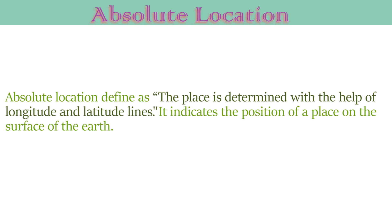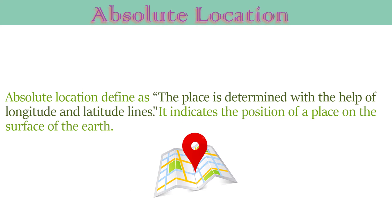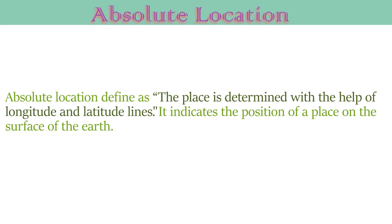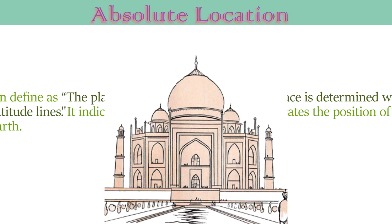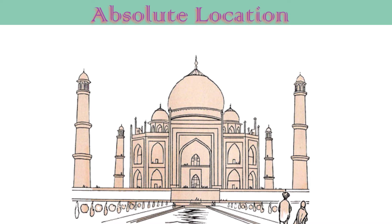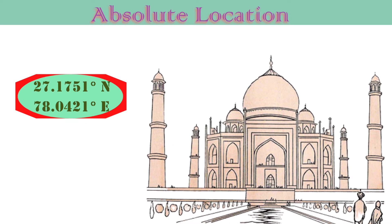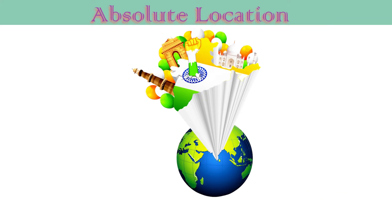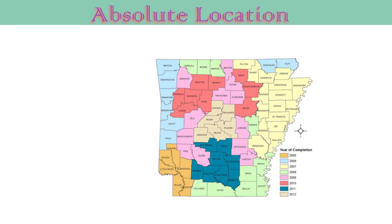Then, absolute location. Absolute location is defined as a place determined with the help of longitude and latitude lines. It indicates the position of a place on the surface of the earth. For example, the absolute location of the Taj Mahal helps to locate it precisely on a map.